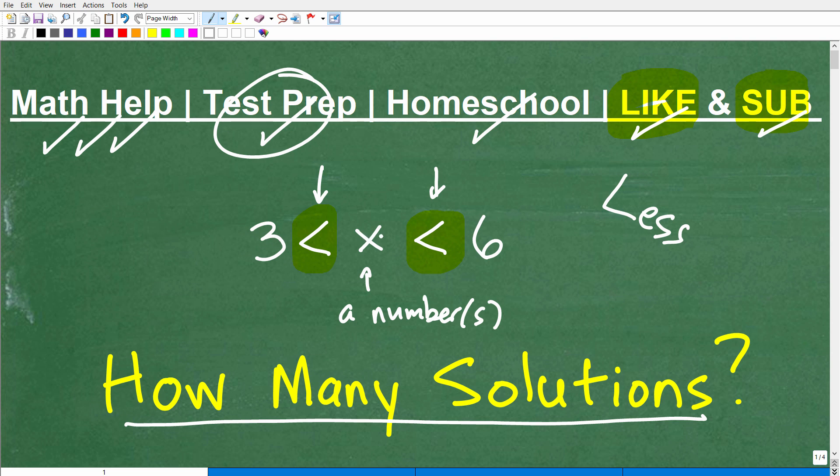where three is less than, i.e. this number is greater than three. So these numbers, all the numbers that are greater than three. Now, at the same time, we have to look at this part of this inequality. So this is saying this number happens to be less than six.